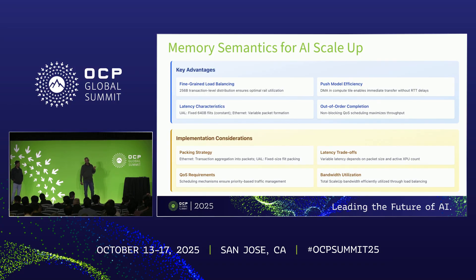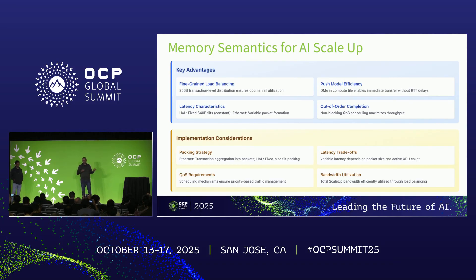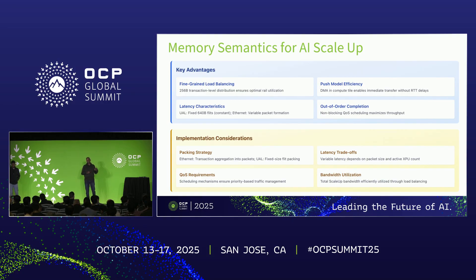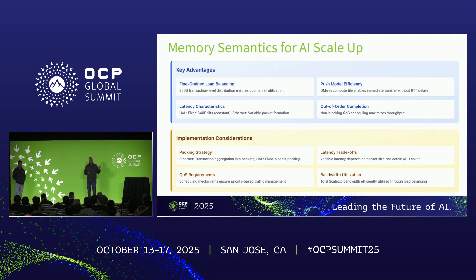For UL, the flit size is always 640 bytes, so we have a constant latency for UL. But for Ethernet, the latency can be variable depending on the packet size and depending on how many memory transactions you're packing within a given packet. And with memory semantics, one of the biggest advantages is it can be a push model.